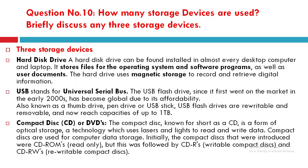The third storage device is compact discs — CDs or DVDs. A compact disc, known as CD, is a form of optical storage, a technology which uses laser and light to read and write data. Compact discs are used for computer data storage. Initially, the compact discs introduced were CD-ROMs, used in read-only mode. This was followed by CD-Rs, writable compact discs.